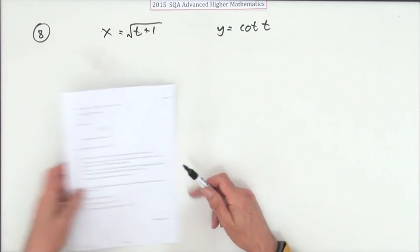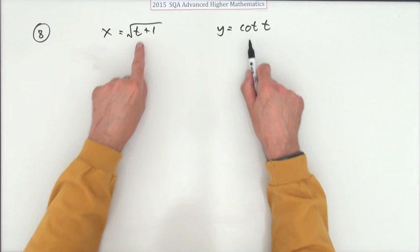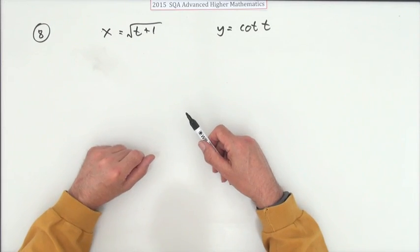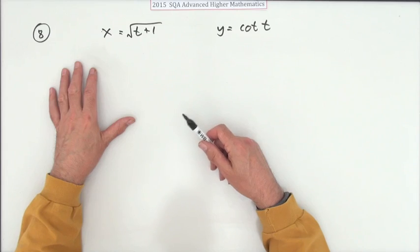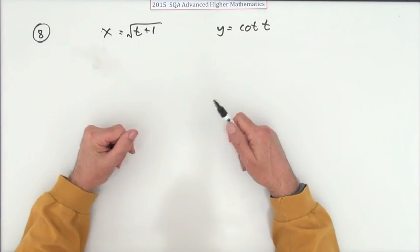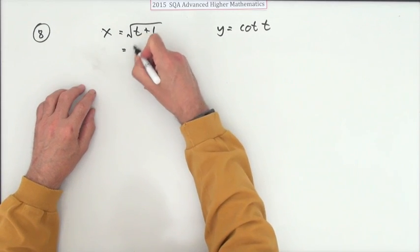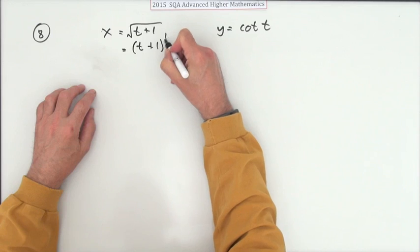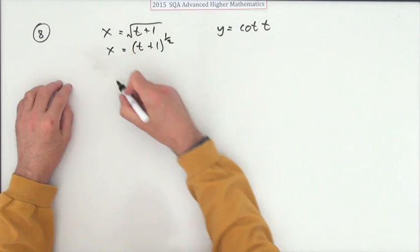First thing you notice is we've got two completely different functions here, so when you're working out dy by dx they're not going to actually mix very well. It's a bit like oil and water. First of all, just write this as (t+1) to the power of a half, then I'll start.